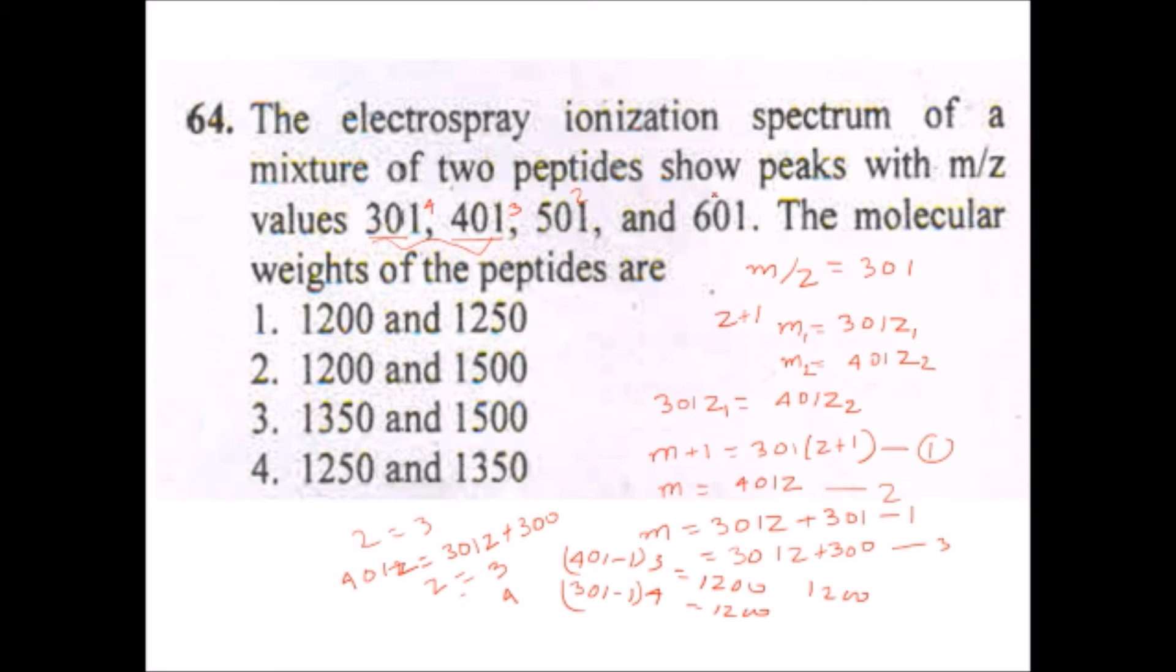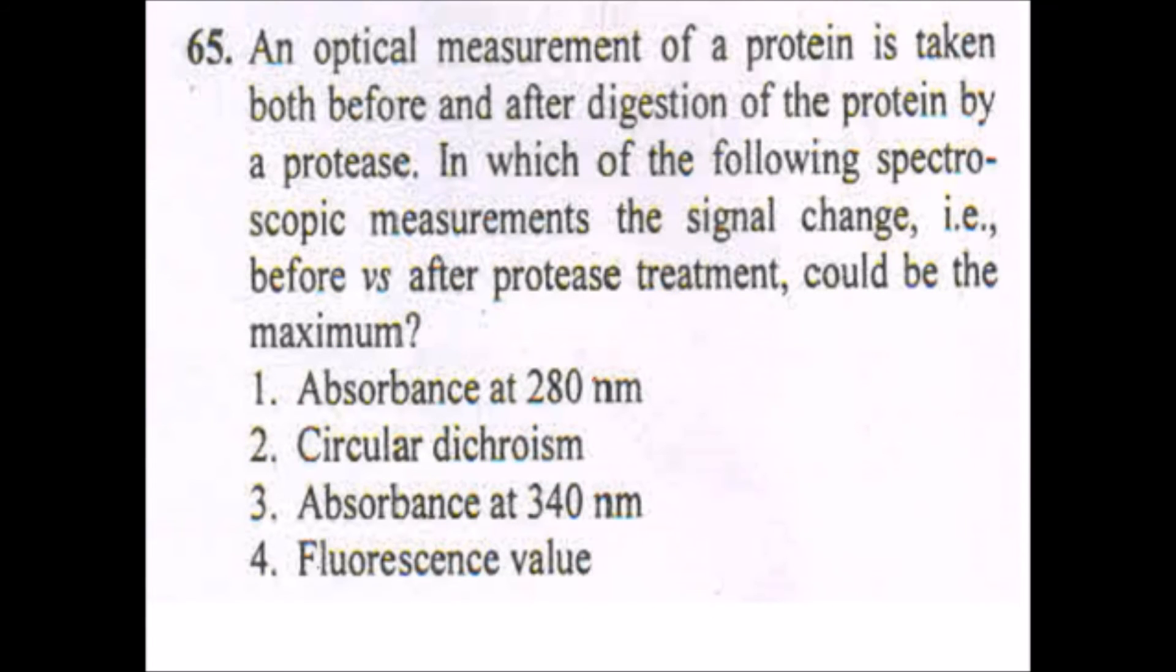But the difficulty is that when we solve for these two, we will not get any of these answers. But I think as these two peaks are nearby, or we can say if the charge is 3, 4, 3, then it will have 2 and 1 charge. So when we calculate for this by the same process, then you will not get any of these values, but we are getting 1200, so I think the answer will be first one, which is 1200 and 1250.